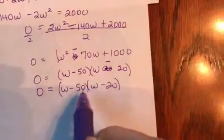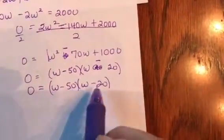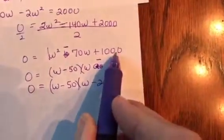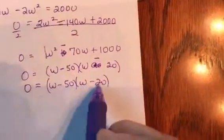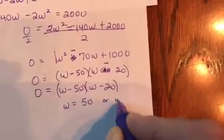You can see if I multiply these two together, negative 50 times negative 20, I get a positive 1,000. But if I add these two together, I get negative 70. So what I get is my width could either be 50 or my width could be 20. We have to define the dimensions for both.